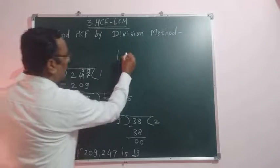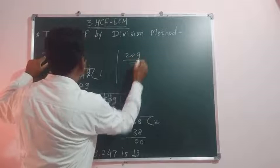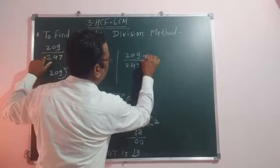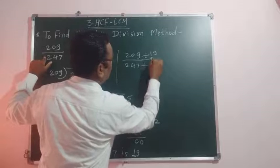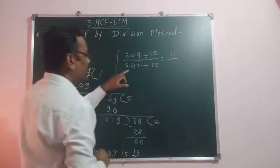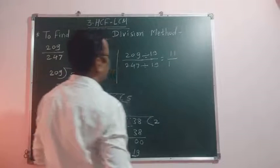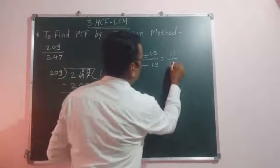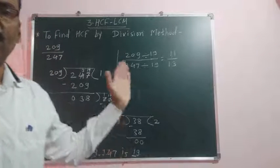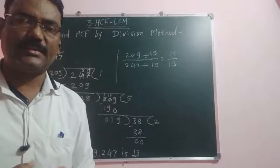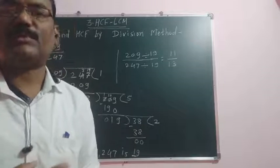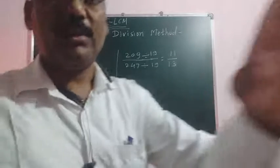So let us see 209 upon 247 divided both numbers here by 19. 19 into 11 is 209, 19 into 13 is 247. So 11 upon 13 is the simplest form. Like this way we can solve examples. Such examples are given in practice set 12, question number 2. You can practice it at home. Thank you.